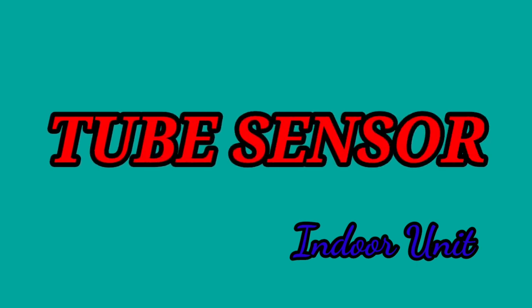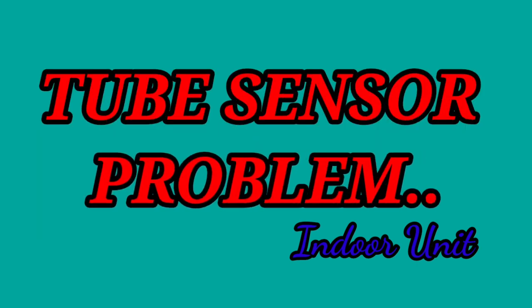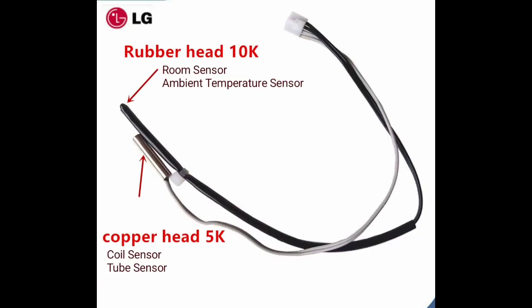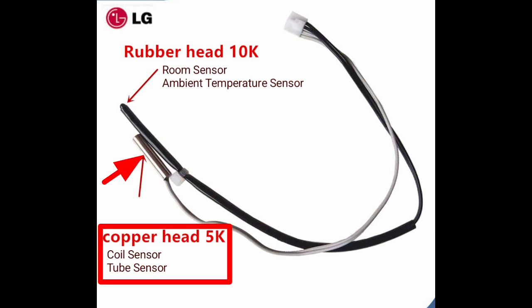Now, what about CH2 or E2 error code? This comes because of a tube sensor problem. As shown in the picture, this is the tube sensor — a copper head 5K coil sensor. If this sensor is faulty, then the CH2 error will come. So: CH1 is because of the rubber head sensor, and CH2 is because of the copper head sensor.